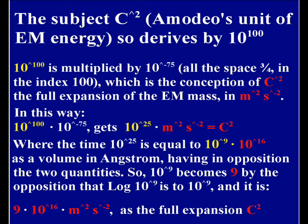10 raised to 100 multiplied by 10 raised to minus 75 gets 10 raised to 25 multiplied by meters squared every second squared as the C².